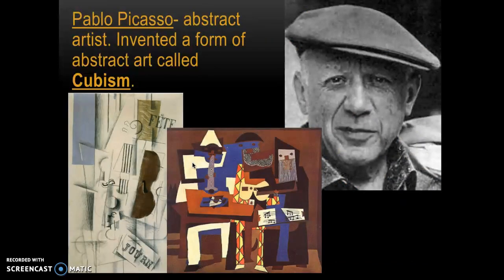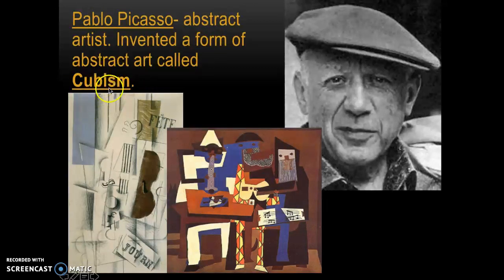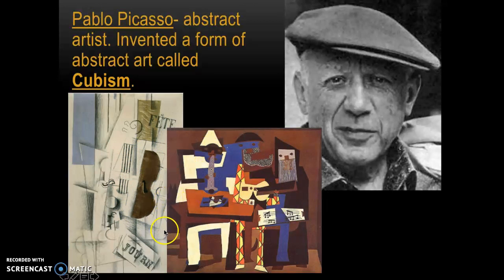Pablo Picasso is the artist we're really going to focus on when we learn about abstract art, because he was probably one of the most famous abstract artists. He was one of the first abstract artists and he invented a form of abstract art called cubism. These are two of his works of art right here. We can kind of tell there's an instrument here and some people here, but you really have to study these works to tell what he was trying to paint.